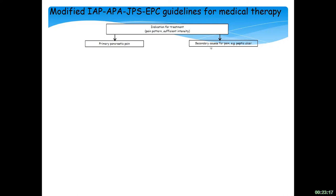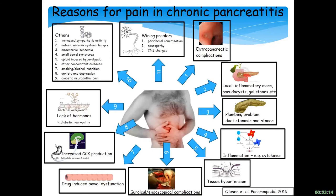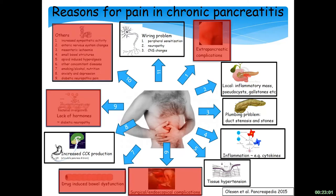The reason for that is — and this is also available for free download on Pancreapedia — those are the different reasons for pain in chronic pancreatitis, and a lot of these are really secondary. For example, peptic ulcer seen in up to 30% of patients due to bad blood circulation, opioid-induced bowel dysfunction, surgical complications, bacterial overgrowth, enteropathy due to diabetes, etc. All of this can be treated rather successfully.